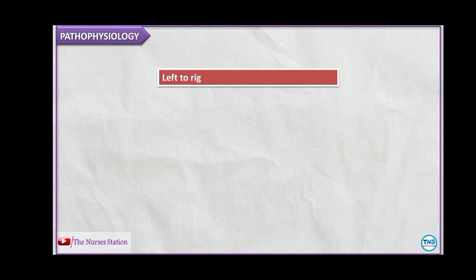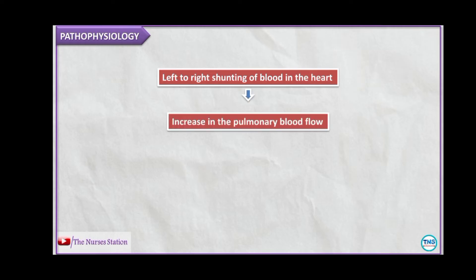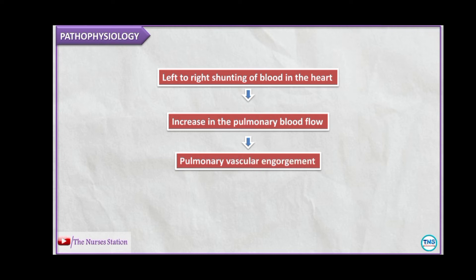Regarding pathophysiology, the hemodynamic changes depend on the severity of the defect and the child's pulmonary vascular resistance. Immediately after birth, while the newborn's pulmonary vascular resistance is higher than systemic resistance, there is minimal shunting of blood through the defect. When this resistance falls, left-to-right shunting occurs, increasing pulmonary blood flow and leading to pulmonary vascular engorgement, which ultimately results in heart failure.